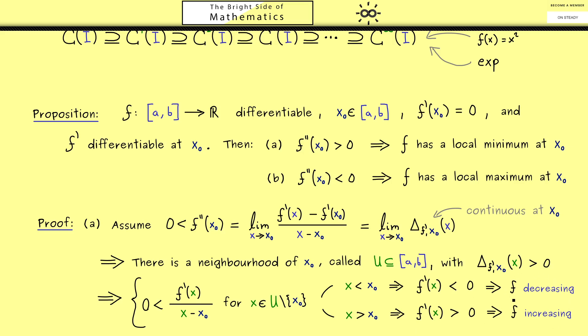Therefore this whole thing means on the left hand side the function goes down and on the right hand side the function goes up, which is by definition saying that f has a local minimum at the point x0. Or in other words the proof here is finished. And now you should have no problems at all writing down the same thing for b.